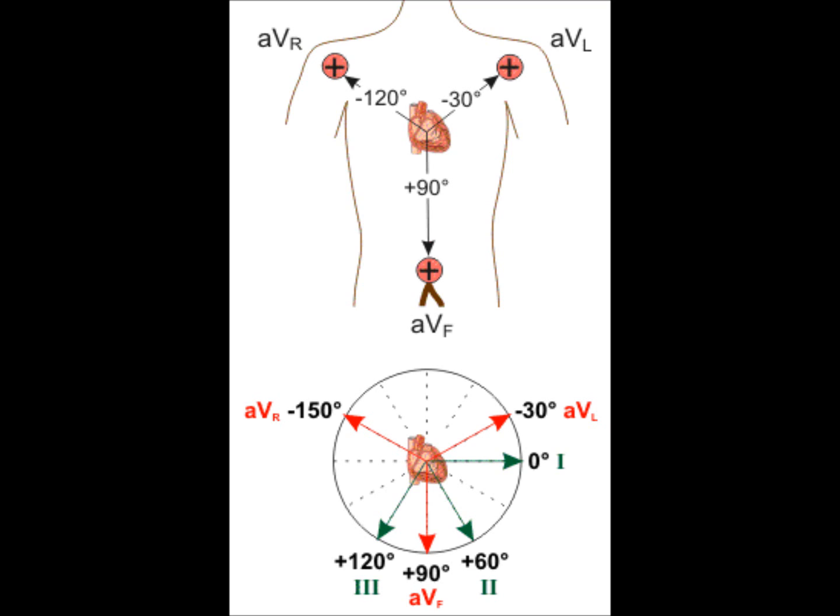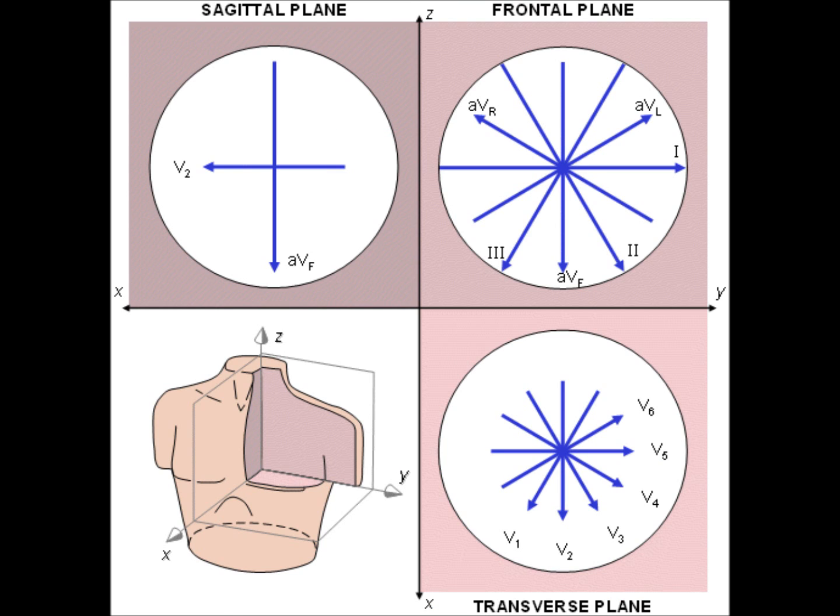The precordial chest leads, as the name implies, records the electrical activity of the chest, primarily the left ventricle. We have 6 precordial chest leads. They are V1, V2, V3, V4, V5, and V6.